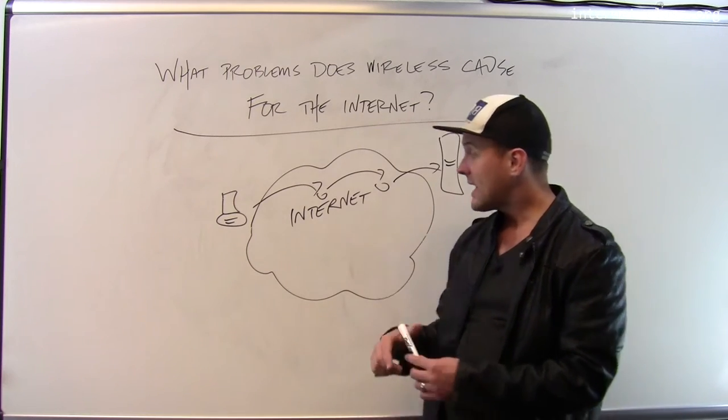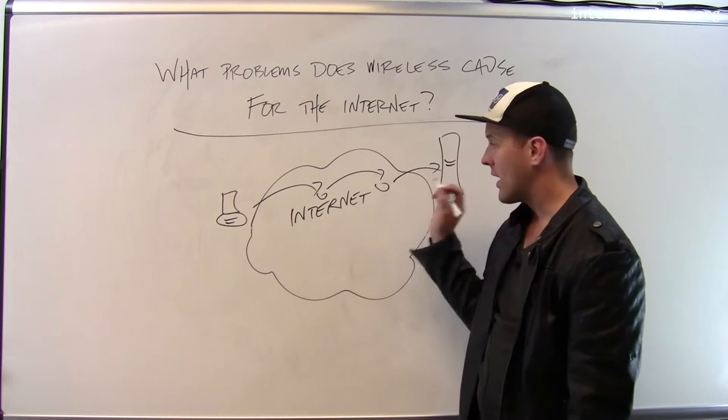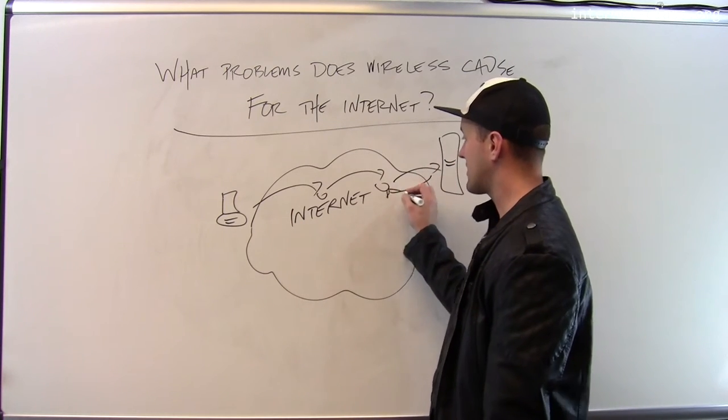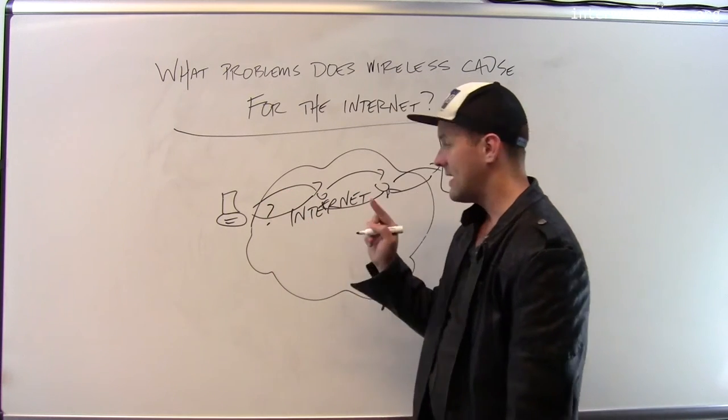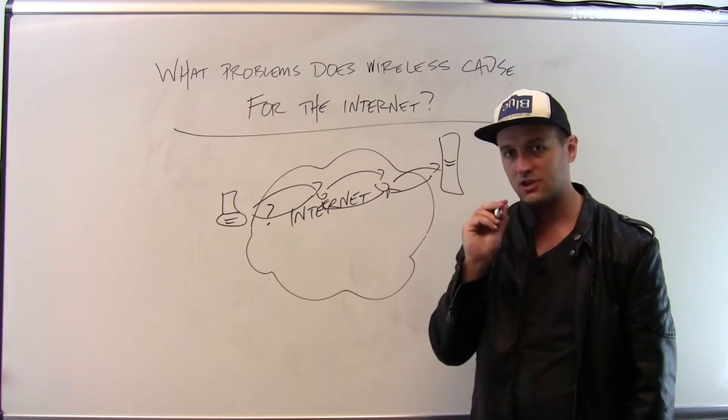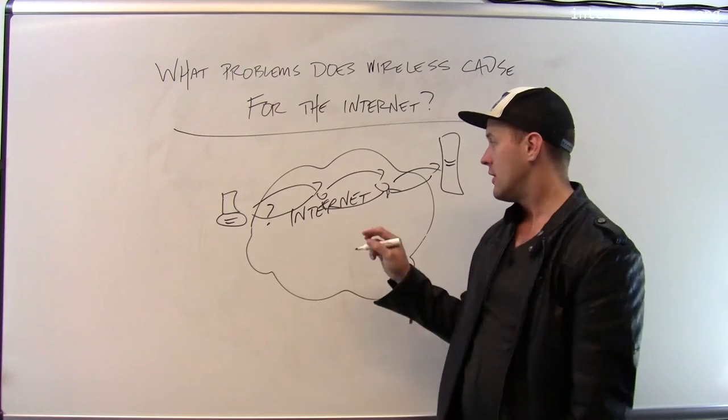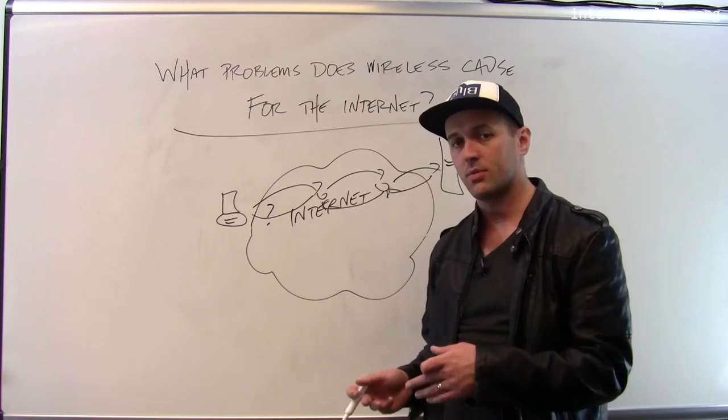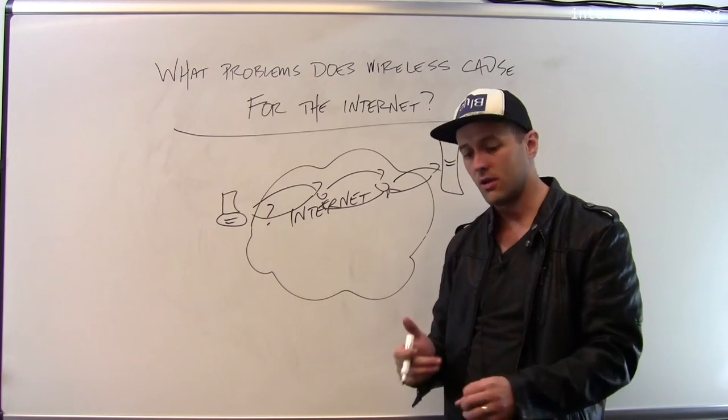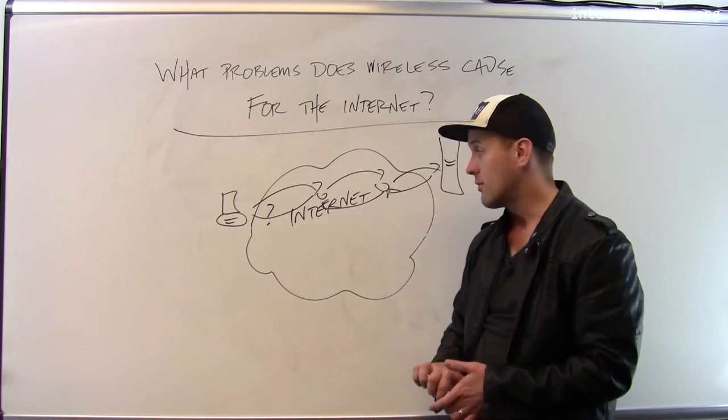And so what that means is that if a packet doesn't arrive, so let's say the server sends me back some data and that packet does not arrive, what I assume is that the loss was due to congestion at a router. So what I assume is that one of these routers was overloaded, had too many packets to process, dropped packets off the end of the queue or the front of the queue, and that's why my packet didn't arrive.